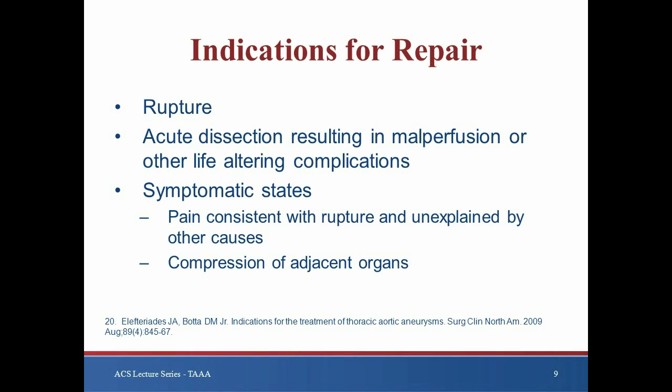The Elefteriades group has published extensively on the natural history and rupture risk of the thoracic aorta stratified by diameter, and they provide the following guidelines for repair of the descending thoracic aorta. Obviously, any aorta that is ruptured needs repair. In addition, acute dissection resulting in malperfusion or other life-altering complications is an indication for repair.